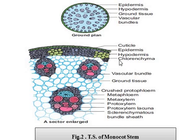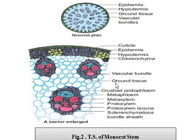After that, there is no differentiation of cortex, endodermis, pericycle, and pith in monocot stem, unlike what we have in dicot. The entire mass from the hypodermis to the center is called ground tissue. There is no differentiation of cortex, endodermis, pericycle, and pith. That is the main distinguishing feature of monocot stem compared to dicot.